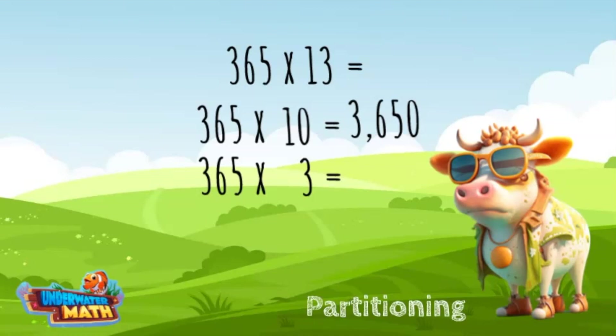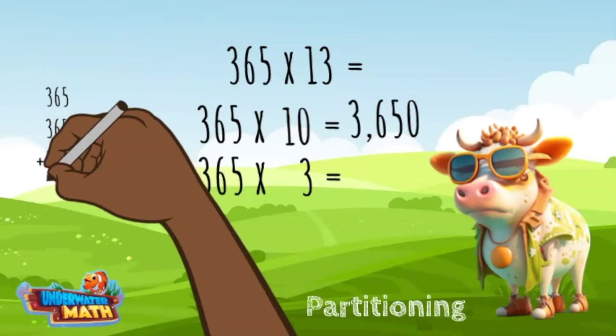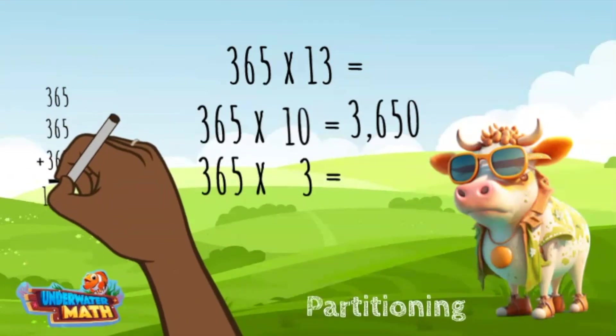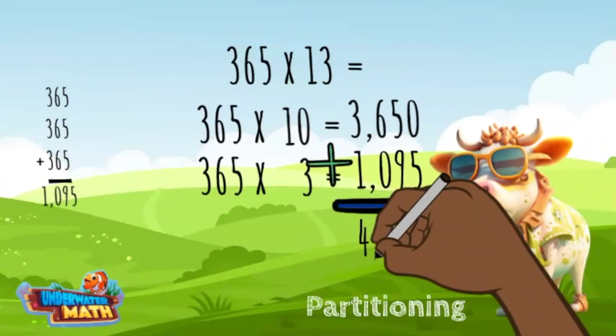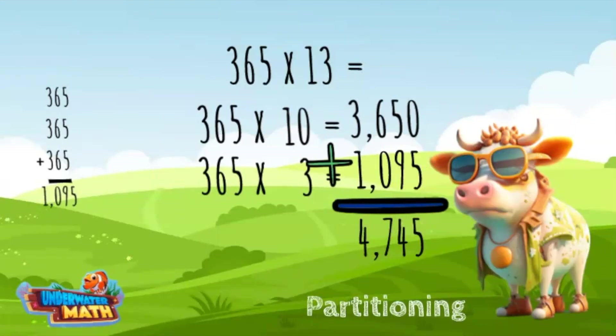Then I multiply 365 by 3. That problem is a little harder, so I am going to add together 365 three times for a sum of 1095. I add the two products together for a total product of 4745.